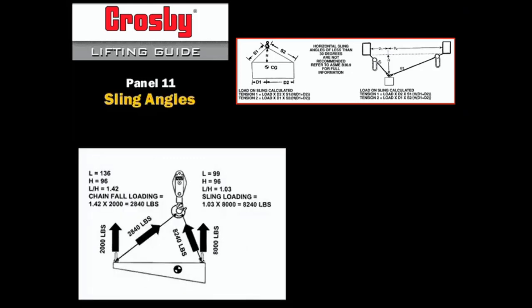But since the chain fall and sling are not lifting vertically, the sling angle multiplier increases the vertical loads. The tension on the chain fall will be the vertical load of 2,000 pounds times the length over height multiplier of 1.42 or 2,840 pounds at a sling angle of approximately 45 degrees.